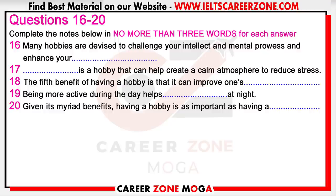Fourth, hobbies can help reduce stress. Most people pursue hobbies because they enjoy them, and many things that we enjoy doing help relieve stress in our lives. Some of these activities may also help create a calm atmosphere to reduce stress. Examples include cooking or baking, gardening, taking a walk, singing, reading, or playing a musical instrument.